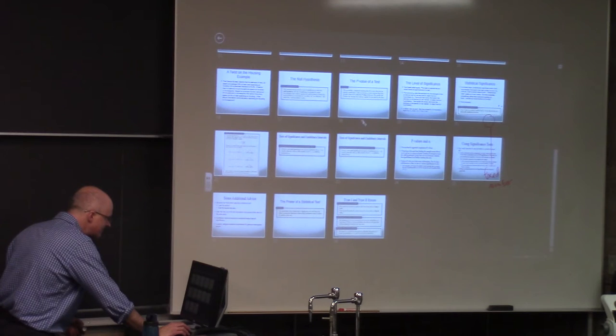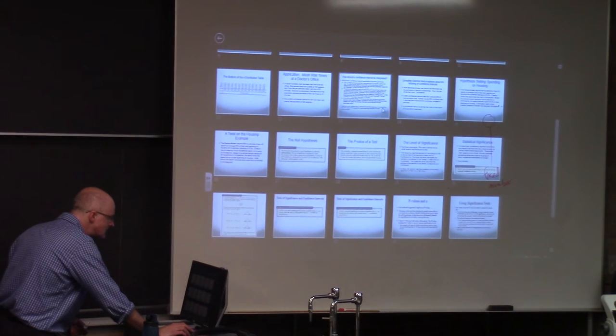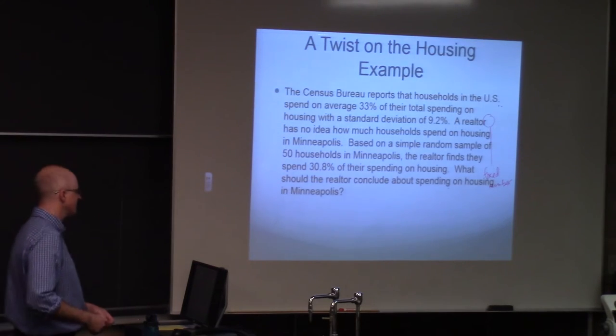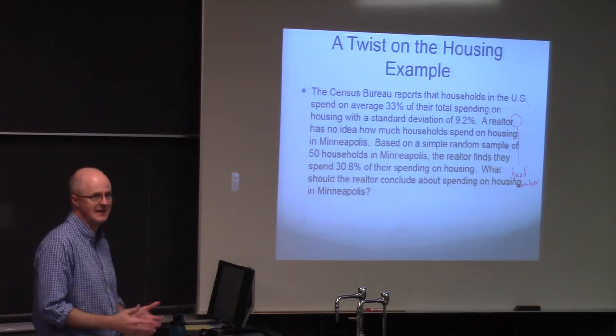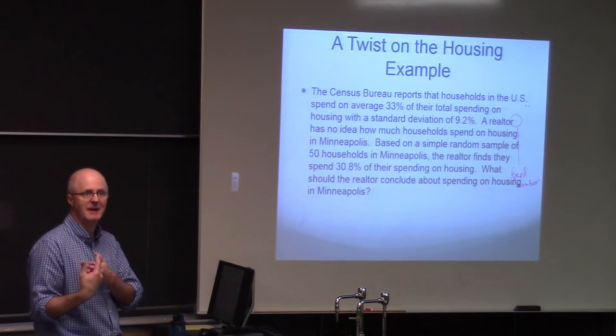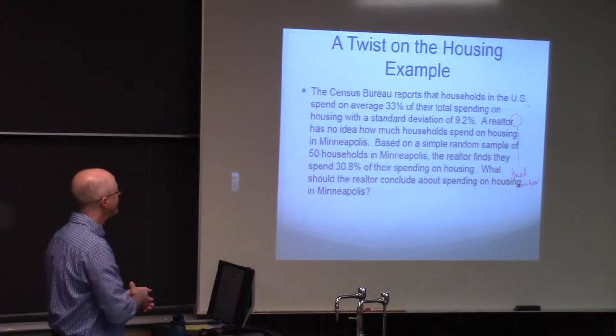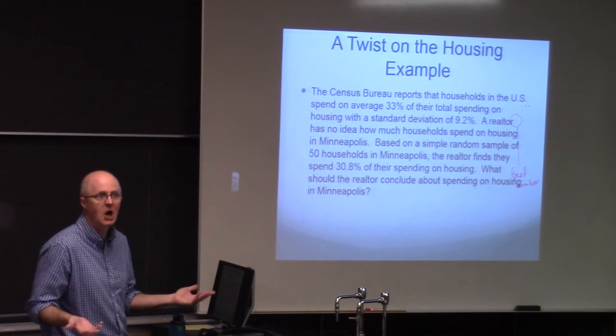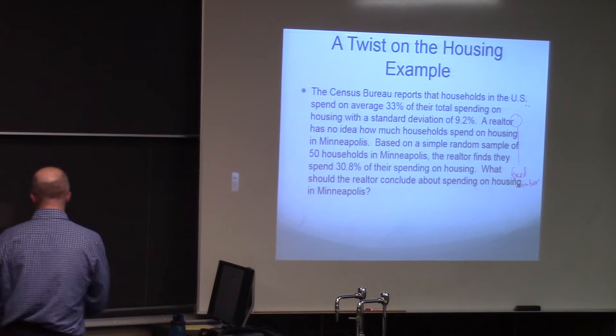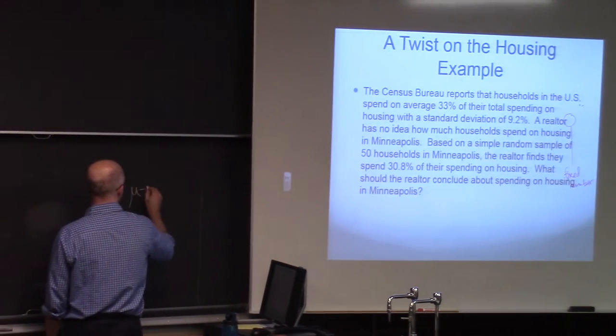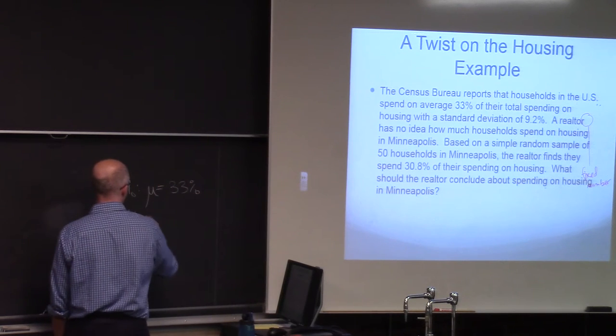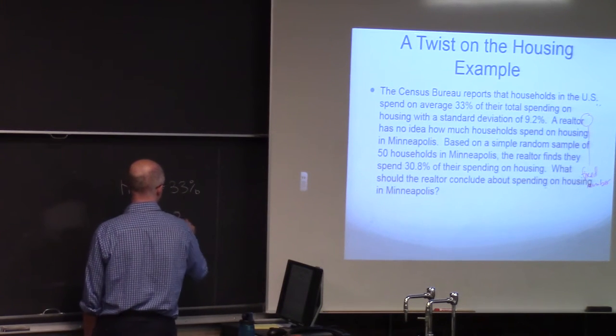Okay, let's do the housing example. So this was the example from last time where it was a two-sided test. We did a similar example that was one-sided. You remember the one-sided one, the realtor had a theory that people in Minneapolis spent less than the national average on housing. And this twisted one, the twist on the housing example, we're pretending the realtor doesn't know, has no idea whether people in Minneapolis spend more or less on housing. And therefore, because of that, it was a two-sided test. The null hypothesis is that the spending in Minneapolis was the same as the national average, 33%. And the alternative hypothesis is that it was not 33%.